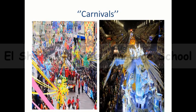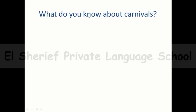Hello Primary 5, today we will introduce Unit 3, Lessons 5 and 6. We will talk about carnivals. As you can see, I have two pictures of different carnivals. A carnival is a public festival that usually happens at the same time every year. It involves music and dancing in the streets, and people wear brightly colorful clothes.